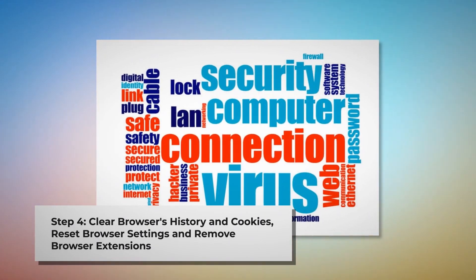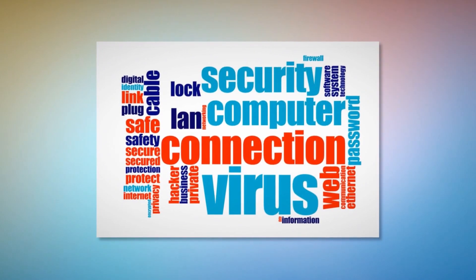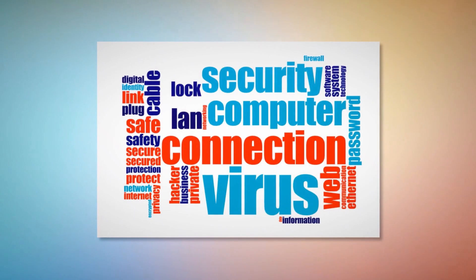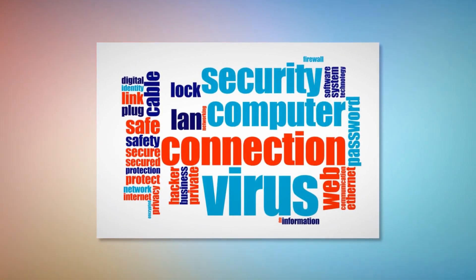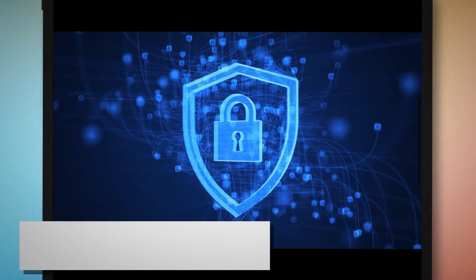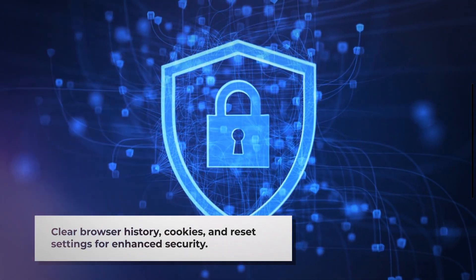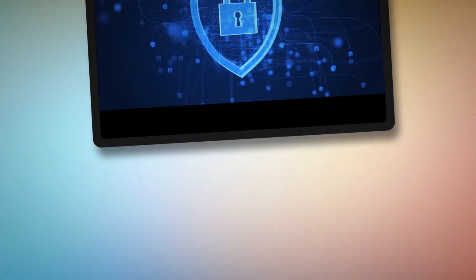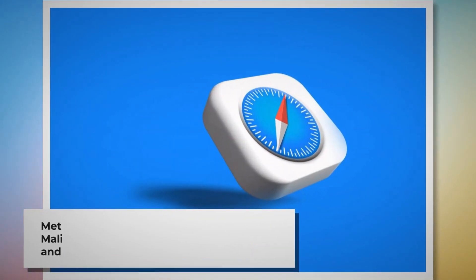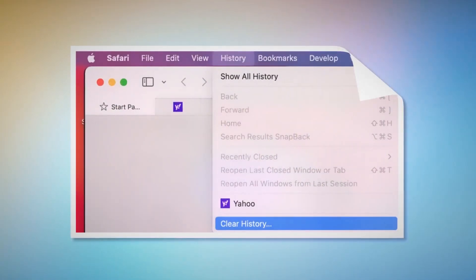Step 4: Clear browser history and cookies, reset browser settings, and remove or disable unknown browser extensions. Once you delete the harmful files as mentioned in Step 3, you should also delete malicious or unknown extensions from your browsers — Safari, Chrome, Firefox, Opera, and so on. Delete browser history, cookies, and reset your browser. Note: before resetting, it's always a good idea to back up your bookmarks.